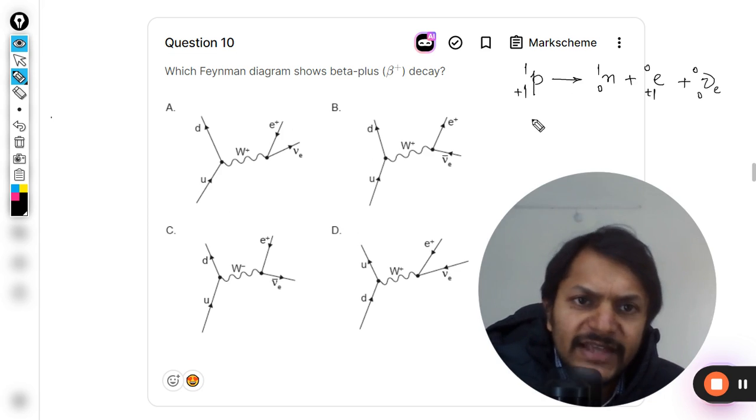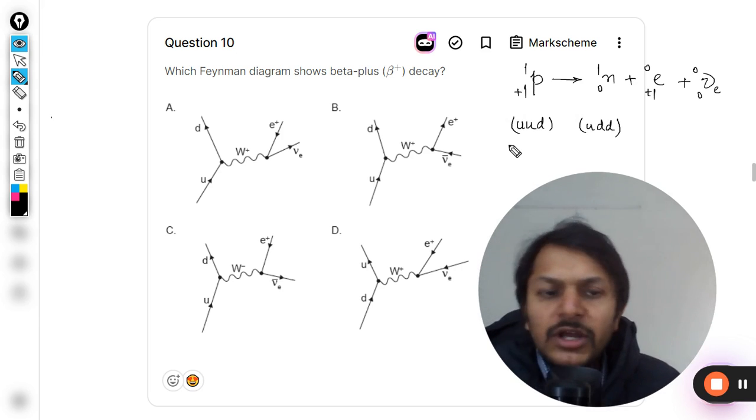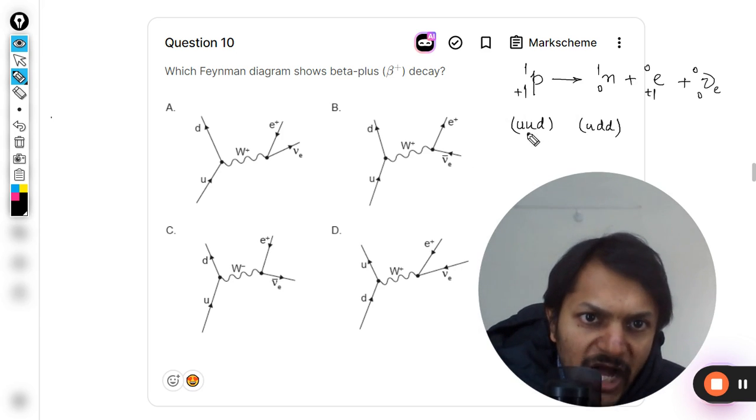When we're reading this Feynman diagram, what is actually happening is the proton is having up, up, and down quark composition, and the neutron is having up, down, down composition. So one up quark is getting converted into one down quark.